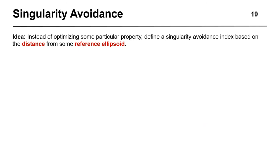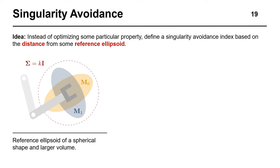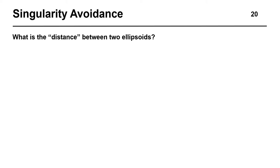This leads us to an interesting idea. If there was a notion of a differentiable distance between ellipsoids, could we derive an optimization criteria that minimizes the distance between the current manipulability ellipsoid and some sufficiently non-singular ellipsoid? For example, we could set a reference ellipsoid of a spherical shape that is always larger than the current manipulability ellipsoid, forcing it to expand in order to reduce the distance.